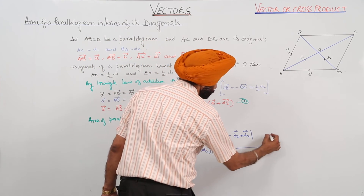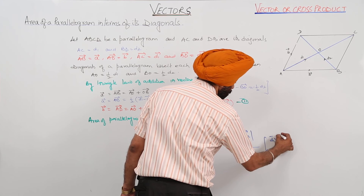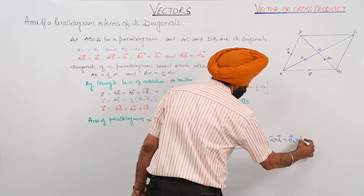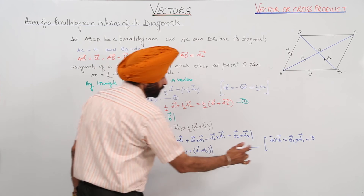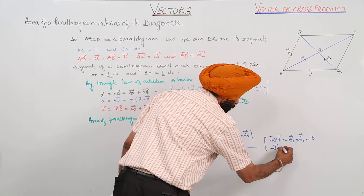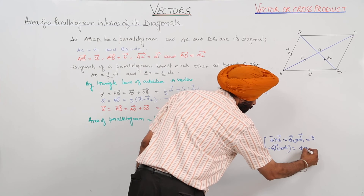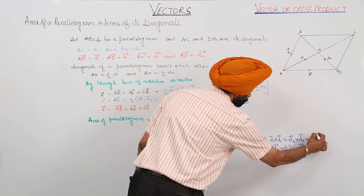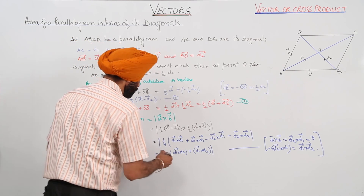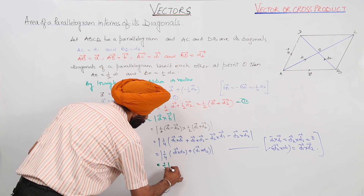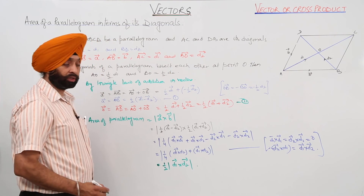Now, vector D1 cross vector D1 equals zero, and vector D2 cross vector D2 equals zero. Also, negative of vector D2 cross vector D1 equals vector D1 cross vector D2. Applying these identities, we get one-quarter times two times vector D1 cross vector D2, which simplifies to one-half of vector D1 cross vector D2.